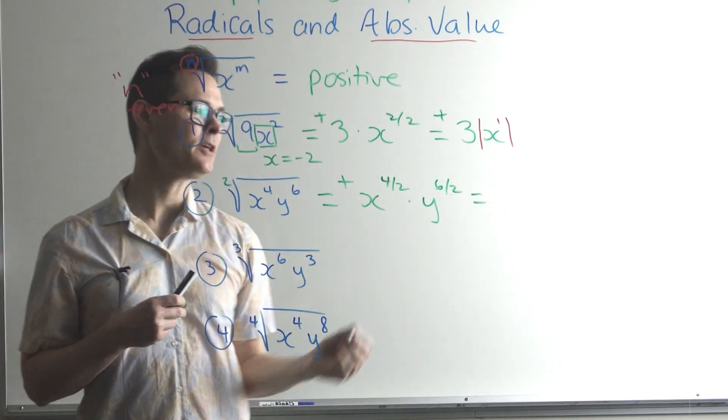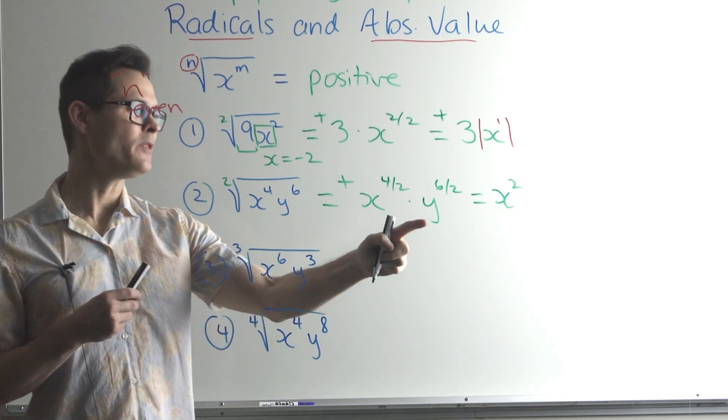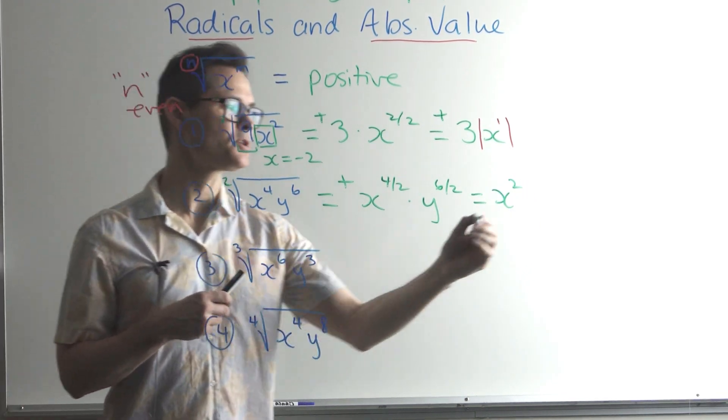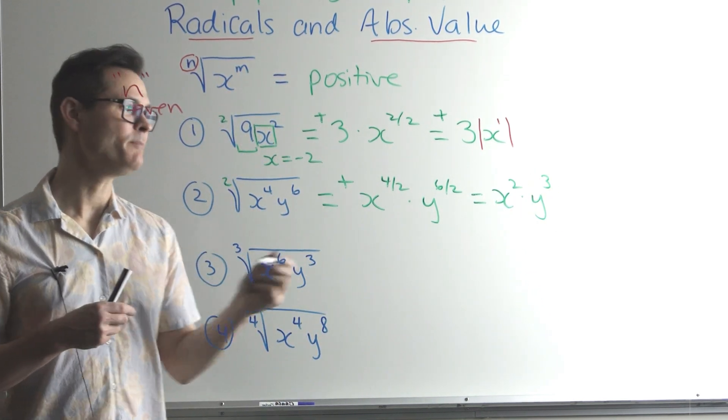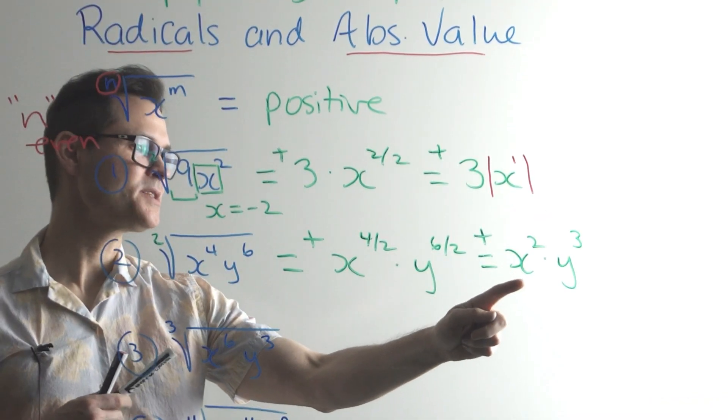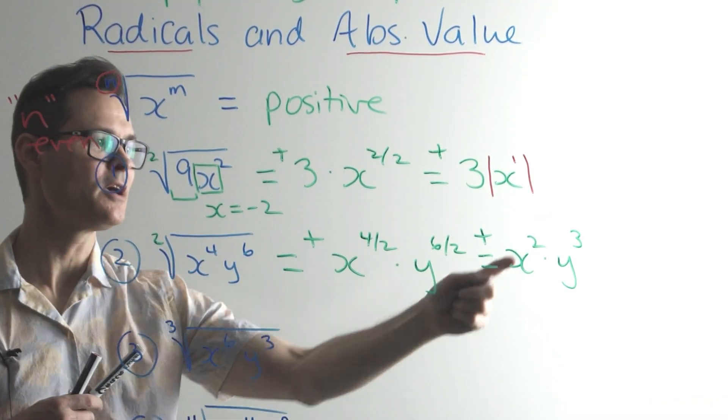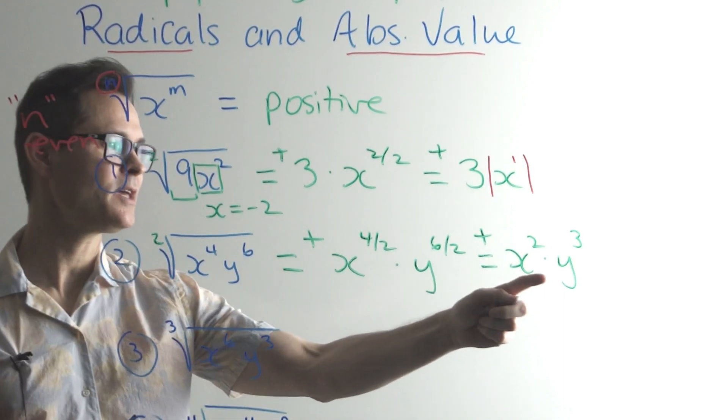Now break this down. So that's going to be equal to, well, x squared. x squared. And then the y to the 6 over 2 is going to be y to the 3. Now just double check. Make sure that the answer is going to be positive. This here is okay. x is okay. Because look, x squared, the square is going to ensure that the answer stays positive. But look here.